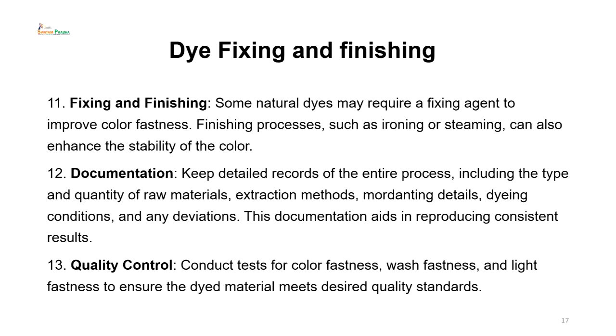Dye fixing and finishing: towards the end of the dyeing process, some auxiliaries called dye fix or dye finishing agents are used. Some natural dyes may require a fixing agent to improve color fastness. Finishing processes such as ironing or steaming can also enhance the stability of the color — steam ironing at low heat on the fabric makes the color settle into the fibers very well.